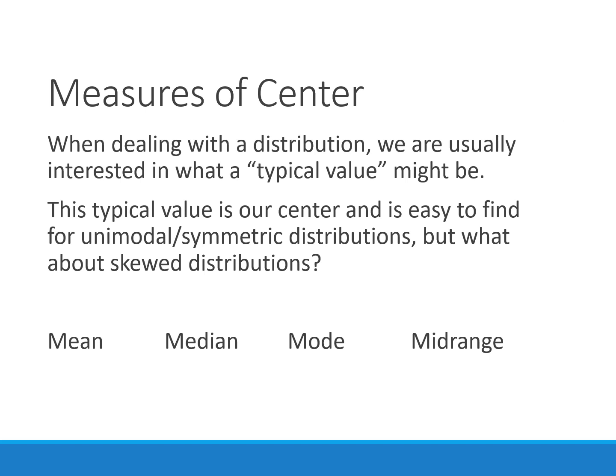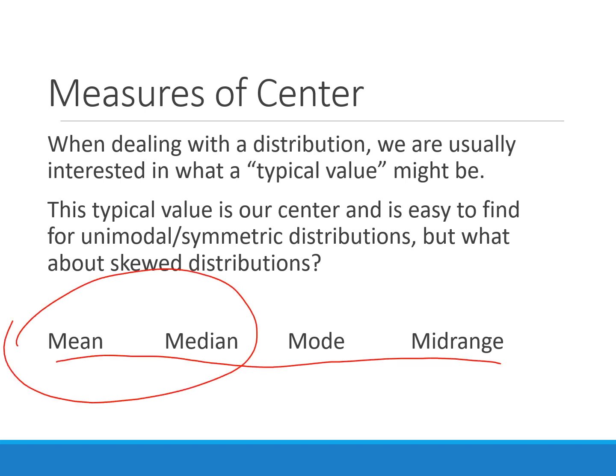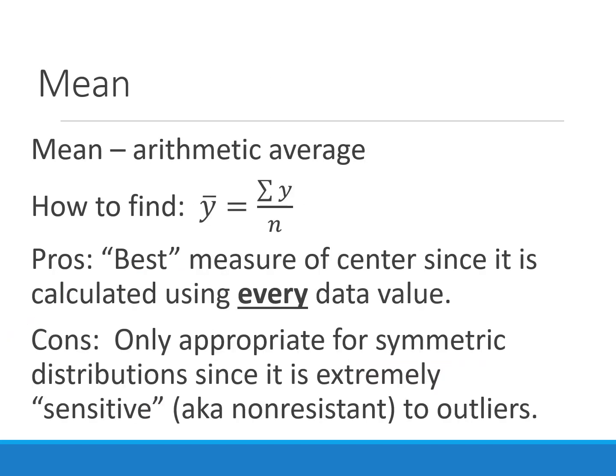Let's start with center since it's the most obvious place to start. If we have a whole bunch of numbers, we want to boil it down to a single value to represent an entire data set. There are a number of ways to describe center, but the two most common are the mean and the median. The mean is the arithmetic average — we take all of our values, add them up, and divide by how many there are. It's the best measure of center because we calculate it using every data value in the data set.